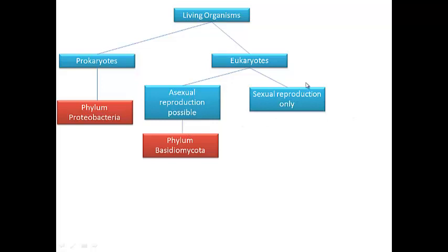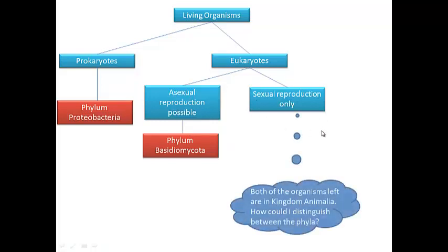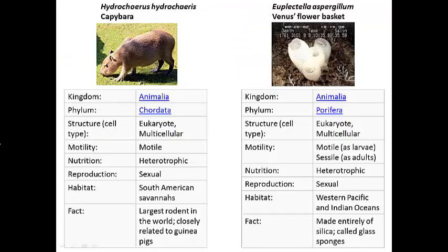Now to finish the remaining choice box. I realize that both organisms left are Kingdom Animalia, meaning I must differentiate between the two animal phylums. When I review my organism research cards,